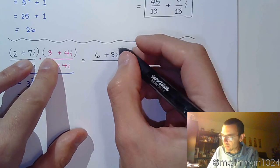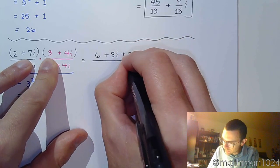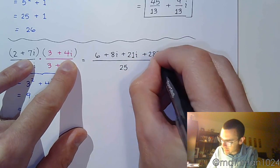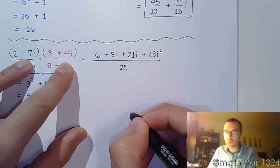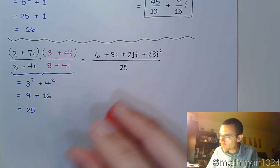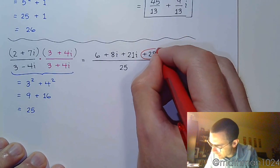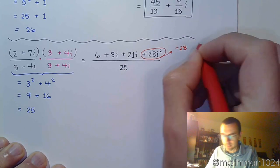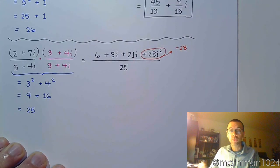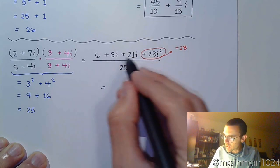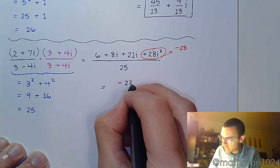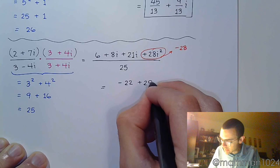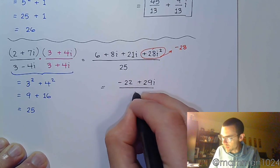Then you go to the inside part. 7i times 3 is positive 21i, and then plus 28i squared. We have the i squared part here, so we know what happens. Plus 28i squared becomes negative 28. And now we rewrite. So 6 and negative 28 become negative 22. Combine the imaginary parts. 8i plus 21i is 29i, and this is all over 25.